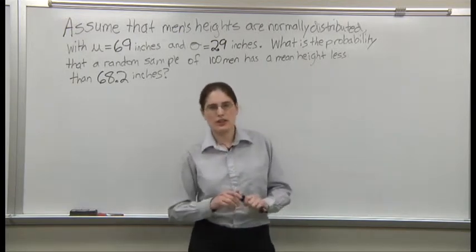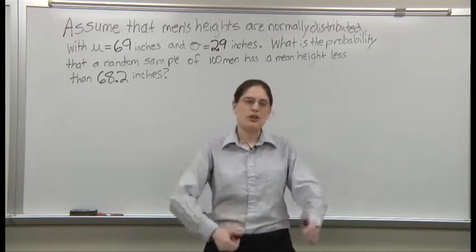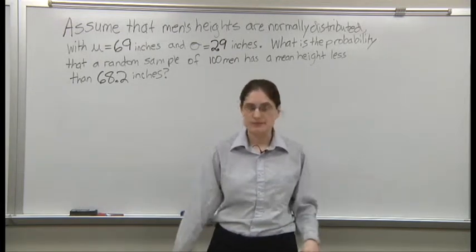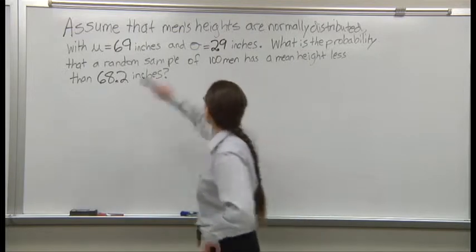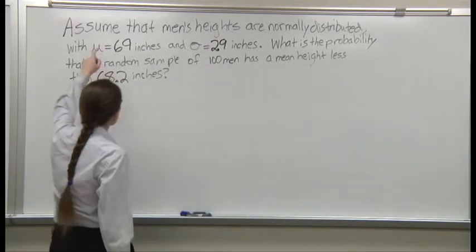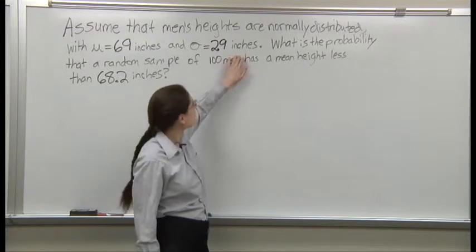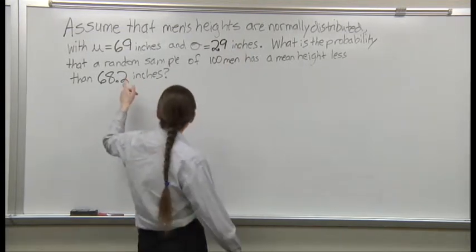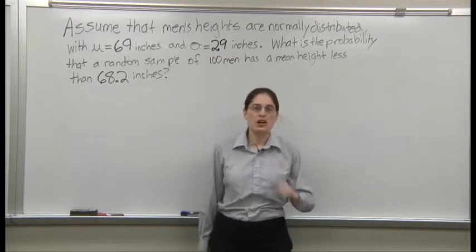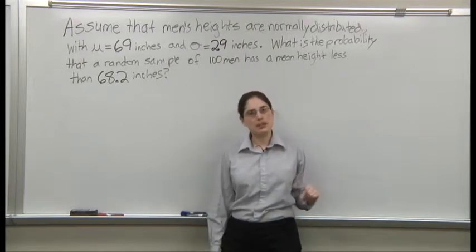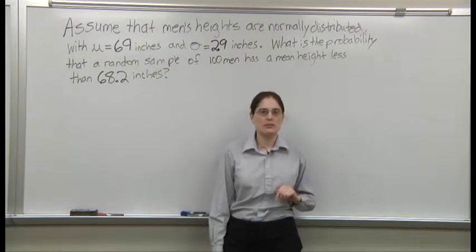Instead of answering that question directly, we're going to go back to a previous chapter. Assume that men's heights are normally distributed with a mean of 69 inches and a standard deviation of 2.9 inches. What is the probability that a random sample of 100 men has a mean height that's less than 68.2 inches?